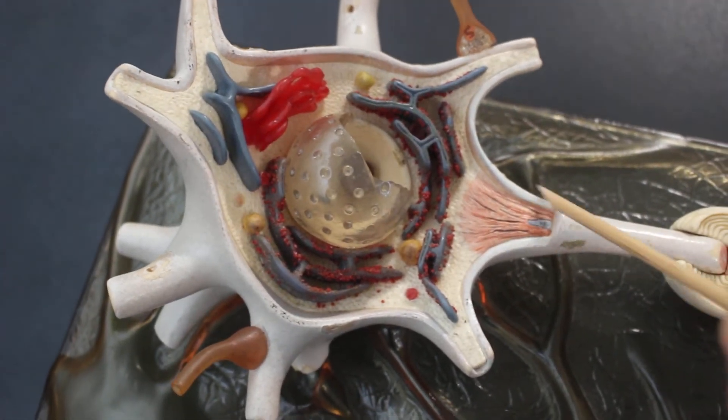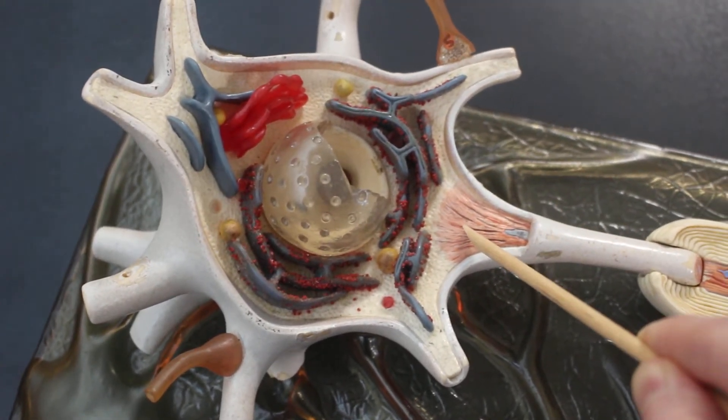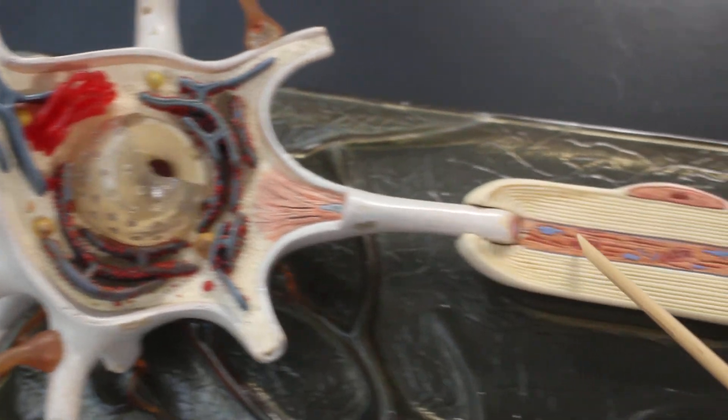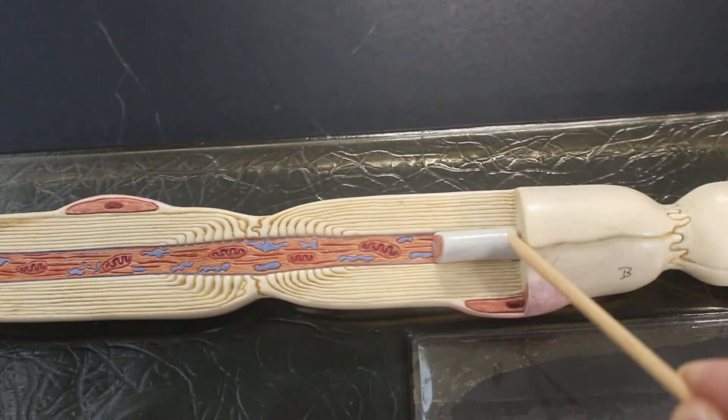This cone-shaped area here is the axon hillock, and then this is the axon. Axon in cross section, axon.